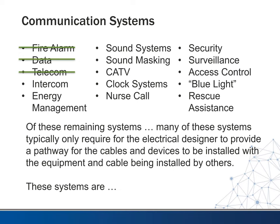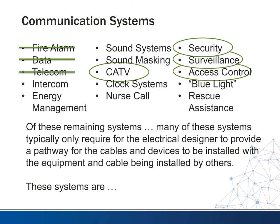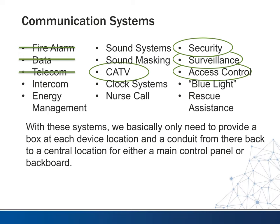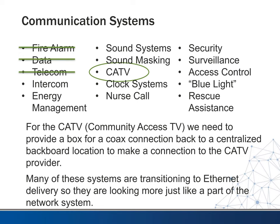Systems in this category include cable TV, security, surveillance, and access control. For these systems we basically only need to provide a box at each device location and a conduit from there back to a central location — either a main control panel or a backboard. For community access TV, we provide a box for coax connection back to the centralized location so they can make a connection to the CATV provider. Many of these systems are transitioning to Ethernet delivery, so they're looking more and more like another part of the network system and they integrate with it in many cases.